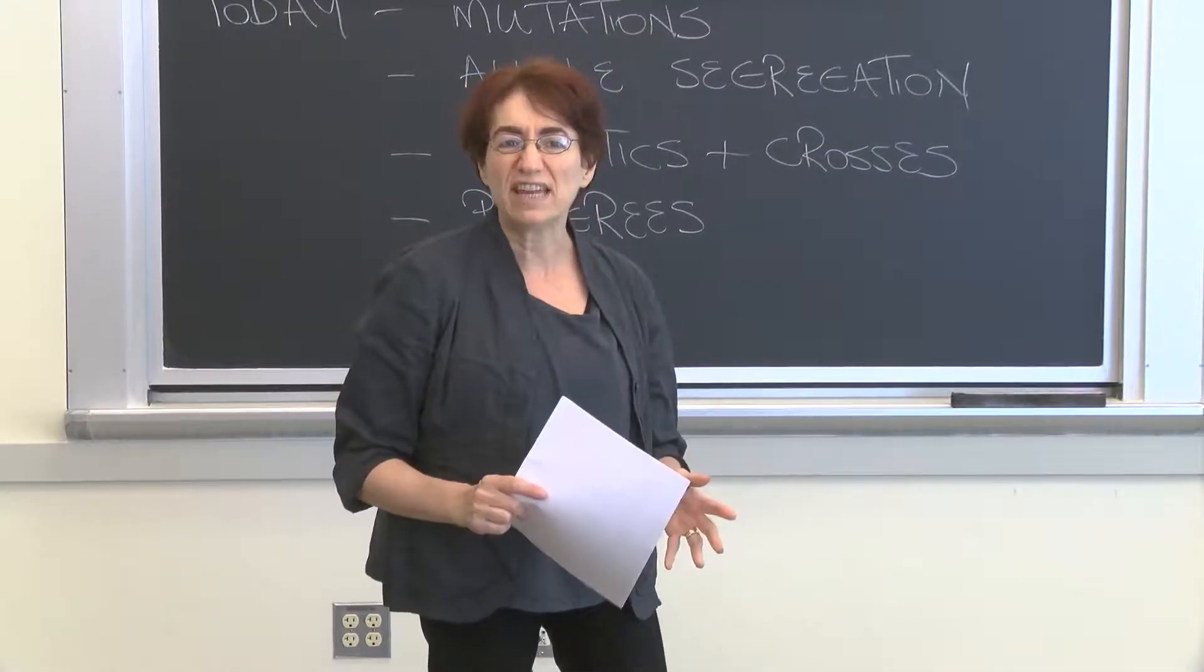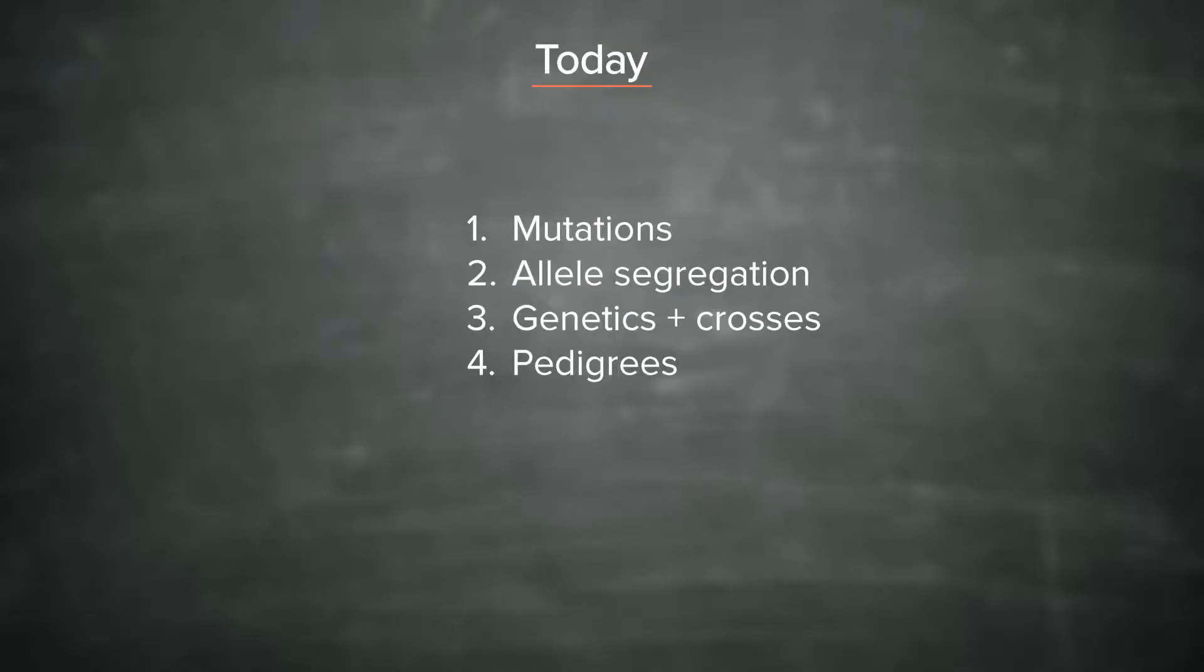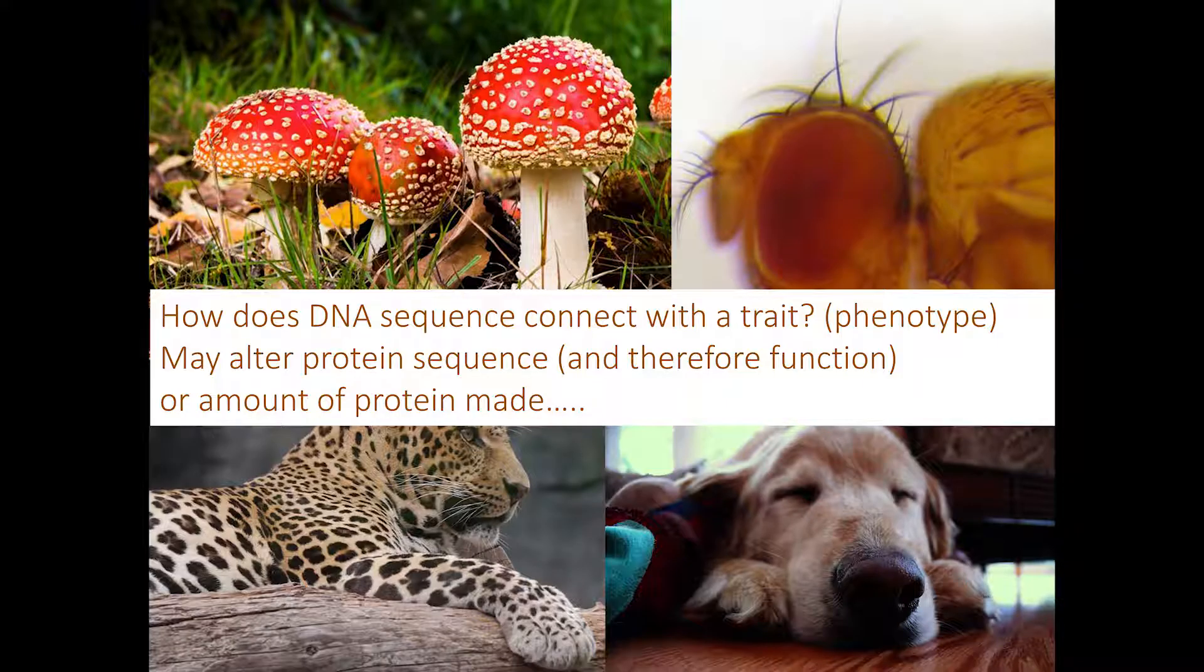Here are our topics for today. We'll firstly talk about mutations, allele segregation, genetics and genetic crosses, and finally pedigrees. The overall theme of today is how does a DNA sequence connect with a trait? A trait is something you can see, an observable characteristic like your eye color or hair color, also called a phenotype. DNA sequence may alter the protein made, the amount or type of protein, and may change all sorts of things, including whether a dog is big or little, or whether an insect has normal mouthparts or legs growing out of its head.